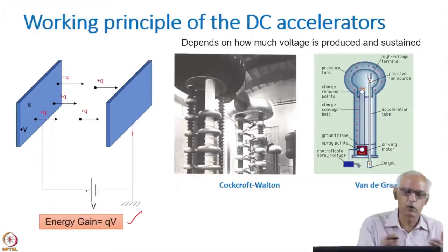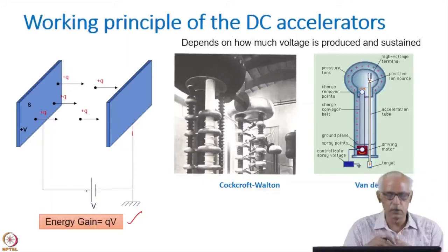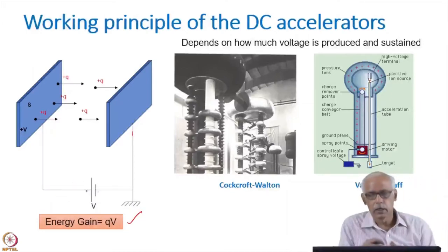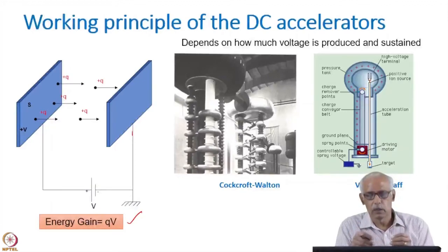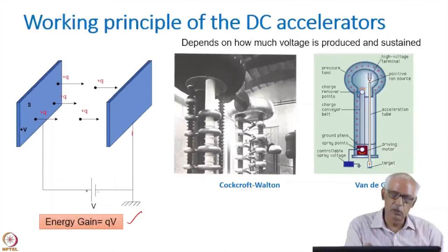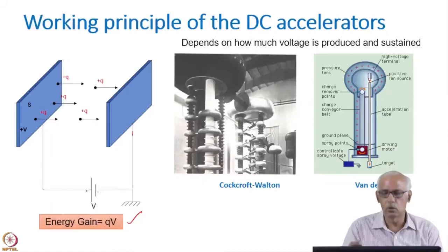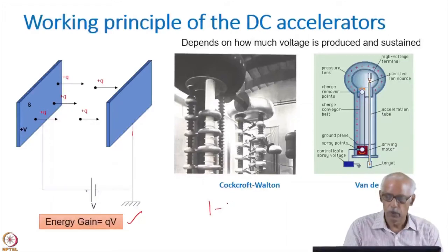But the improvement of that is Cockcroft-Walton. So this acts also like a capacitor. If you can have several capacitors and instead of this DC voltage, you can have AC voltage and you use another circuit which has both capacitors and diode, then the voltage can be much higher, which is interesting. You can see using this technique, people were able to go to higher voltages and about 1.5 million volt could be achieved with this.